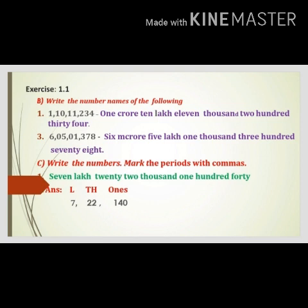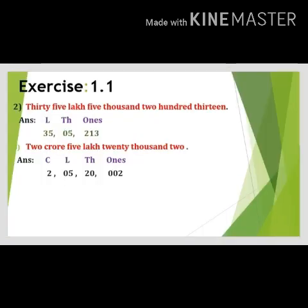Question number two: the given number name is thirty-five lakhs, five thousand, two hundred and thirteen. First mark the periods — ones, thousands, lakhs. Thirty-five is in the lakhs period, five is in the thousands period, two hundred and thirteen is in the ones period. In the thousands period we have to separate by two digits, so in the ten thousands place we put zero: 35 comma 05 comma 213.